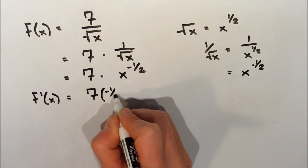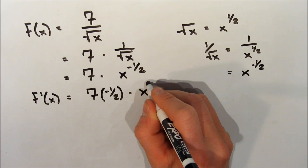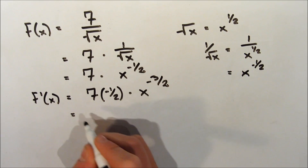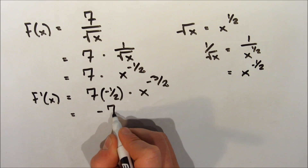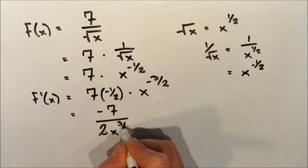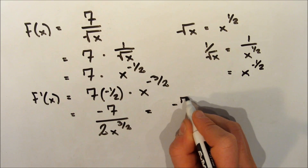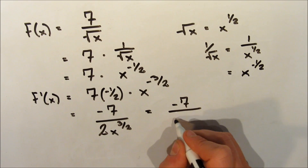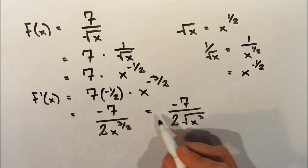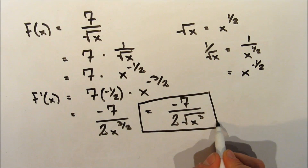It's going to be 7 multiplied by negative 1 half — we're just taking the exponent down again — multiplied by x to the exponent negative 3 over 2. So, negative 1 half minus 1 is just negative 3 over 2. We're going to simplify that, so we get negative 7 over 2 times x to the exponent 3 over 2. And we can simplify that a little further to negative 7 over 2 times the square root of x cubed. And that's it — now we have our derivative.